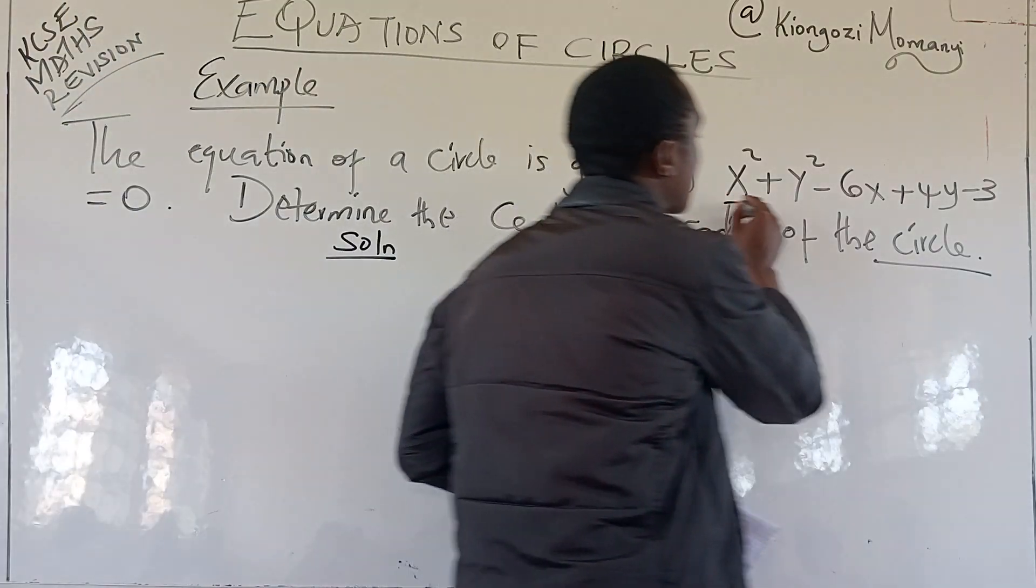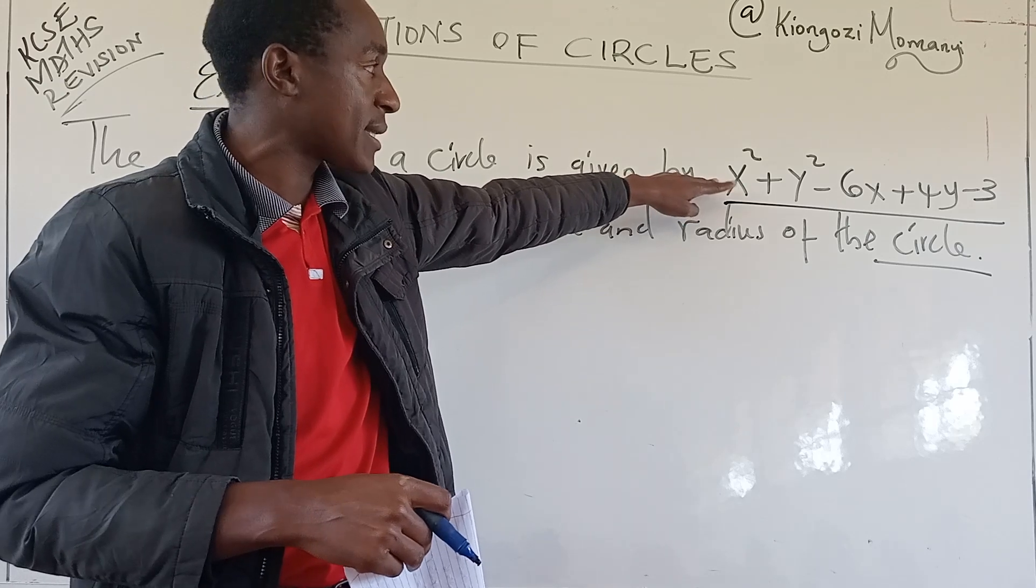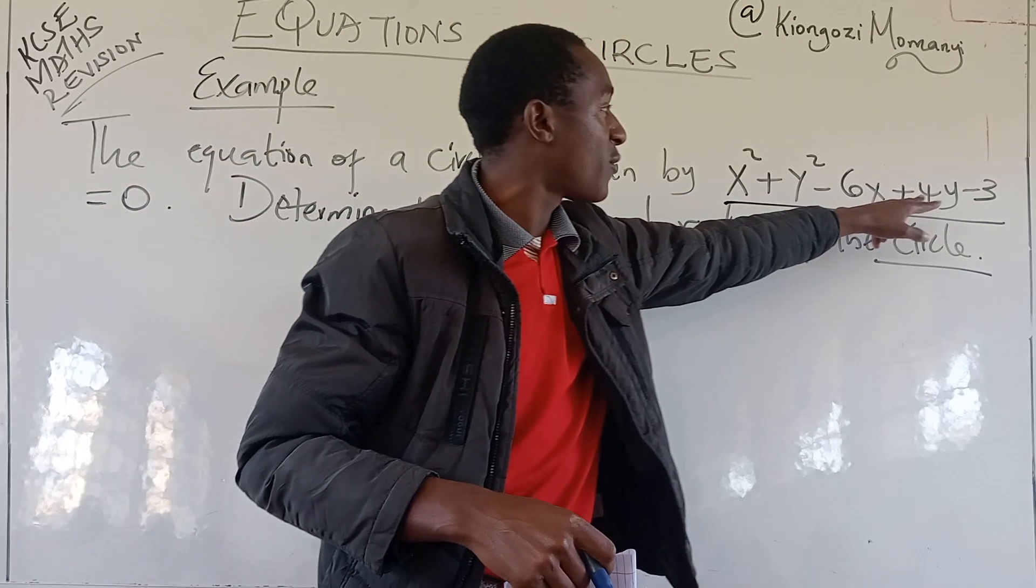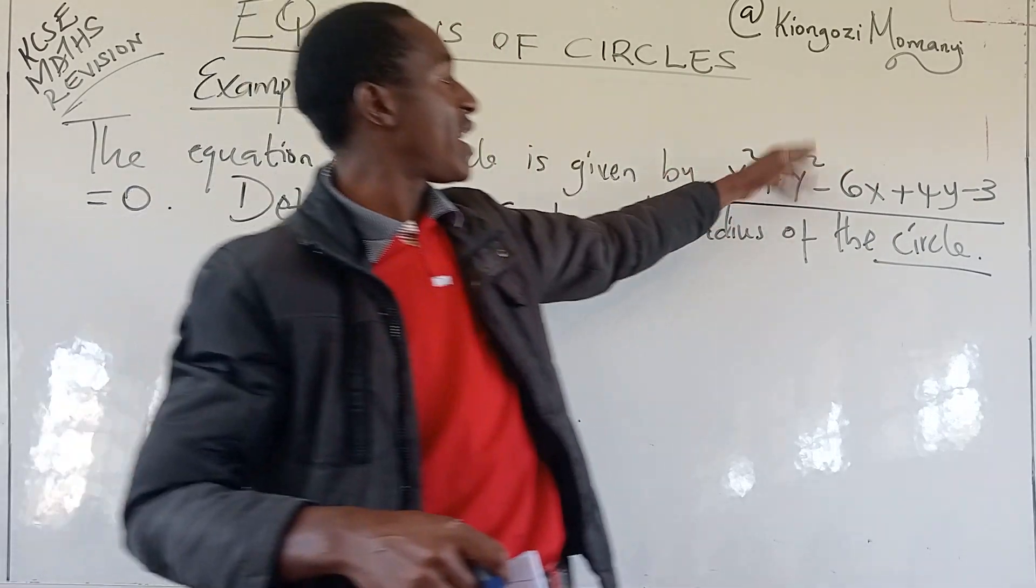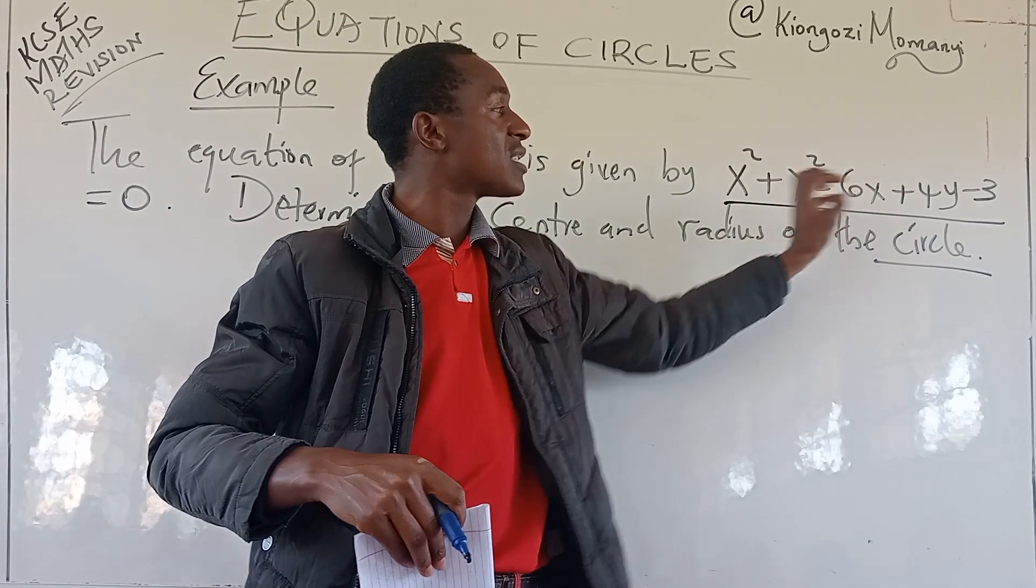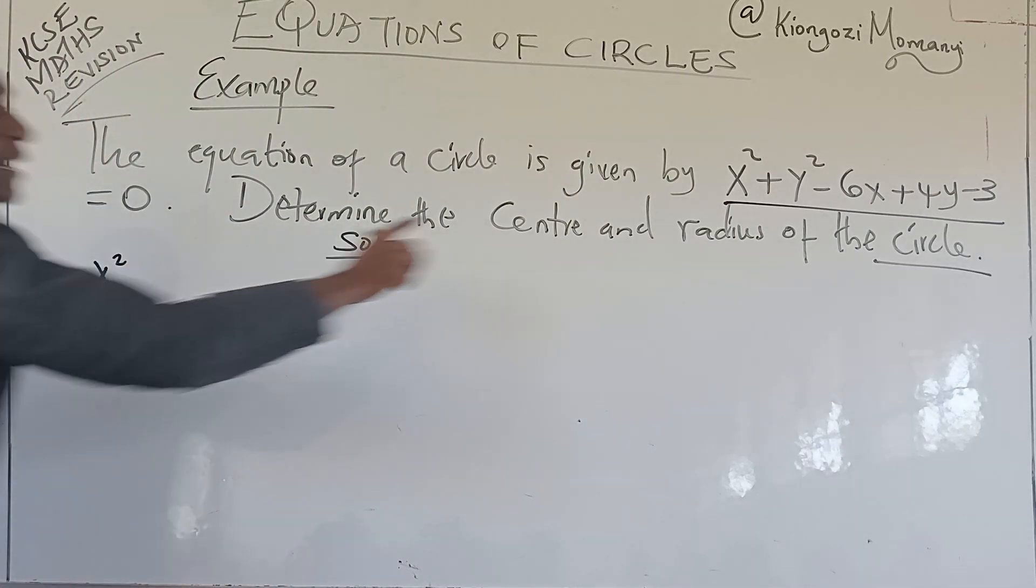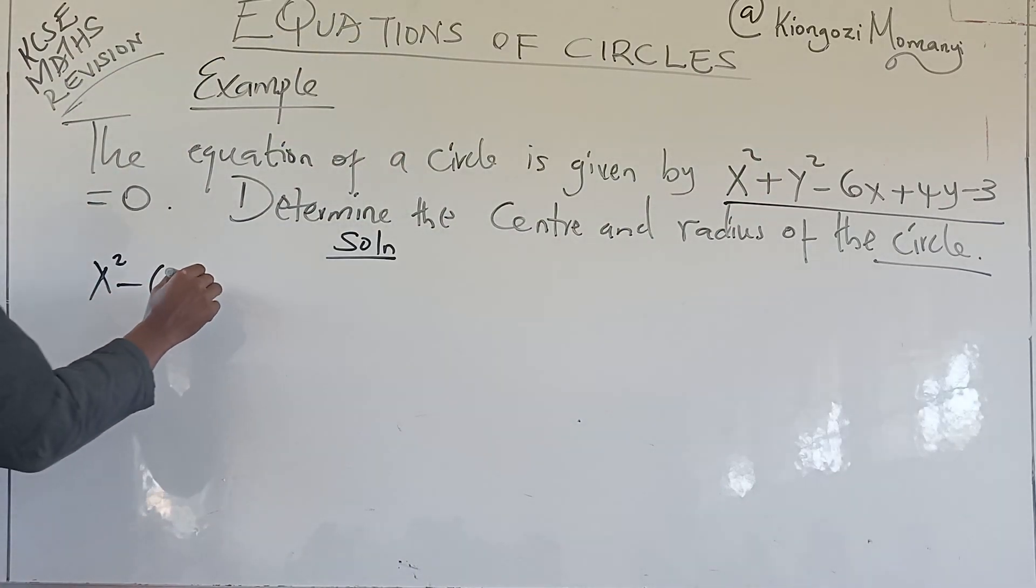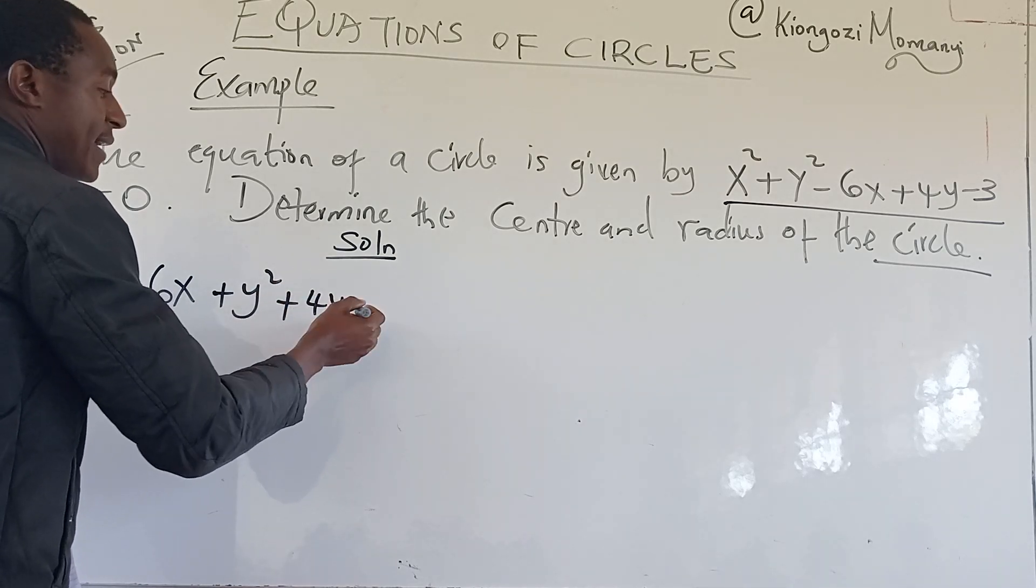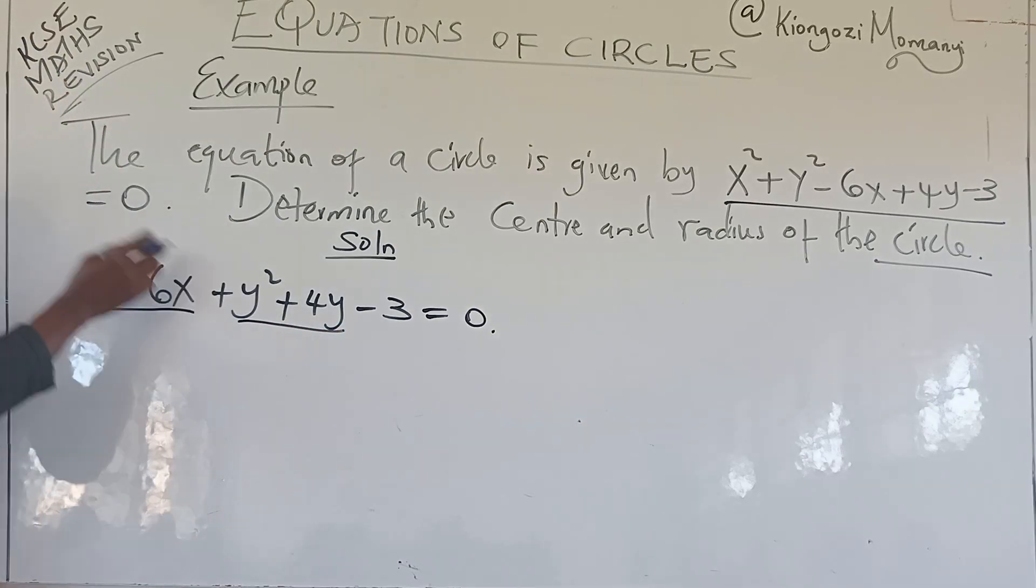We have already said that the equation of a circle is made up of two quadratic equations. And when you look at this equation here, there are values that are related to x. So the first one is where we have x², we also have -6x. And the y values are also y² + 4y. So the x values will make one quadratic, the y values will make another quadratic, -3 and also 0, those ones are constant. So the first thing we do is we arrange this equation of this circle in such a way that we put the x's together and the y's together. So we shall have x² - 6x, that is the first quadratic, then plus y² + 4y, then -3 = 0.